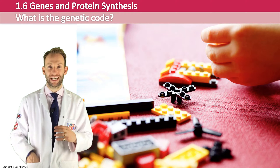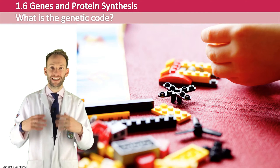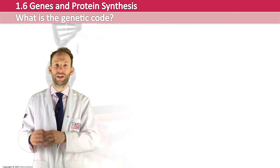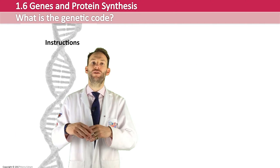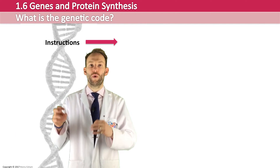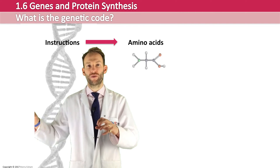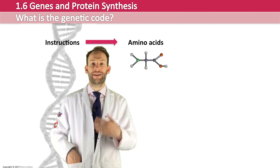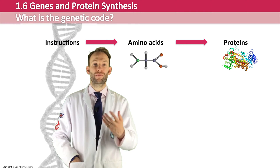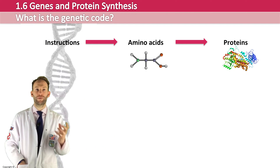Basically, that's what DNA is like. DNA is the equivalent of that instruction booklet. It is a code that tells some machinery in the cell what amino acids to select, to put them together in the right order, and then go on and make proteins. This process of making proteins from the DNA code is called protein synthesis.